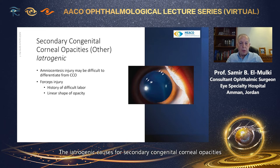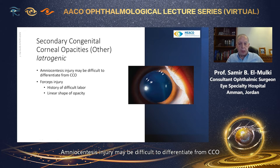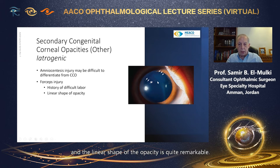The iatrogenic causes for secondary congenital corneal opacities may be due either to amniocentesis or forceps injury. Amniocentesis injury may be difficult to differentiate from CCO because of total corneal opacity. With forceps injury, there is a history of difficult labor and the linear shape of the opacity is quite remarkable.